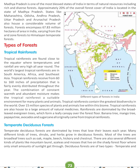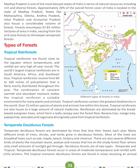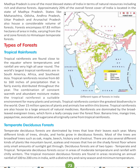Deciduous forests are of two types: temperate and tropical. Temperate deciduous forests occur in areas of moderate temperature and rainfall with chilly winters. The tropical monsoon deciduous forests are found in areas receiving an annual rainfall of 100–200 cm in India, with a distinct dry and rainy season and minimum temperature.